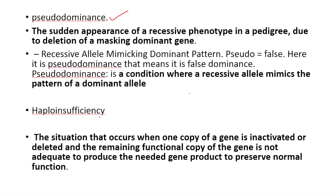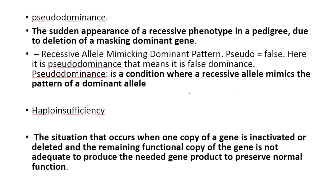The effects of chromosomal deletion include pseudo-dominance and haploinsufficiency. Pseudo means false — pseudo-dominance is the sudden appearance of a recessive phenotype in a pedigree due to the deletion of a masking dominant gene. Pseudo-dominance is a result of deletion.